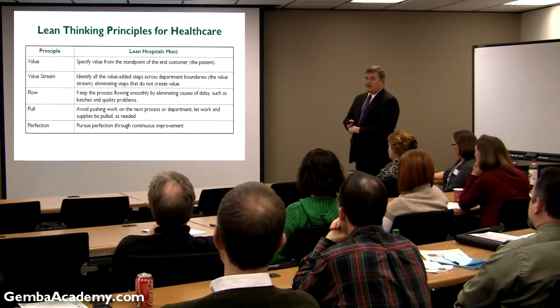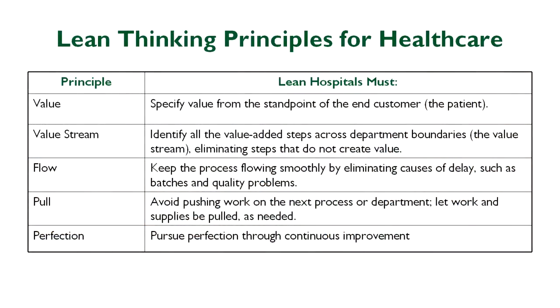This is a quick summary of the LEAN thinking principles we want to embed with 3P. What is the value? We should understand value and value streams, especially patient value. Look at flow — we'll talk about the 7 flows. Then pull systems. And then perfection — usually the hardest one. When we say pursue perfection through continuous improvement, most people get hung up on the perfection part. We're human — we can never be perfect all the time. But we could be perfect in a moment in time. The key is not that we're actually going to be perfect all the time, but that we're constantly pursuing perfection. The key word is pursue.